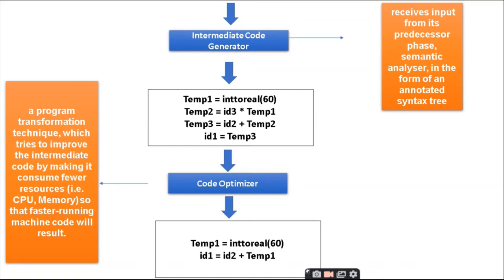The role of the intermediate code generator is to receive input from the semantic analyzer in the form of an annotated syntax tree and generate temporary variables. For example: temp1 = inttoreal(60) converts 60 to a real number; temp2 = id3 * temp1, meaning rate multiplied by 60; temp3 = id2 + temp2, meaning initial plus rate*60; and id1 = temp3, storing the result in position.